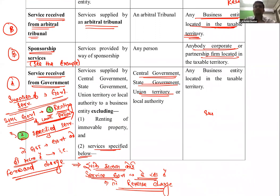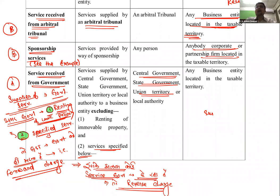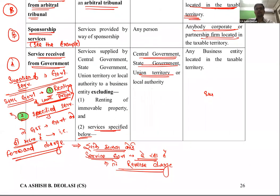तीसरी service — service received from arbitral tribunal। यह same है जैसे advocate वाला। अगर arbitral tribunal कोई business entity को service दे रहा है, तो business entity को GST भरना पड़ेगा। Arbitral tribunal forward charge में कभी भी GST नहीं भरता। Arbitral tribunal वह होता है जहाँ speedy disposal of cases होता है।